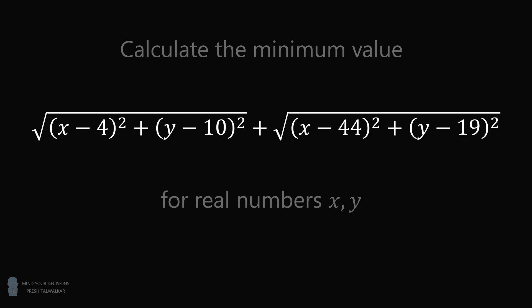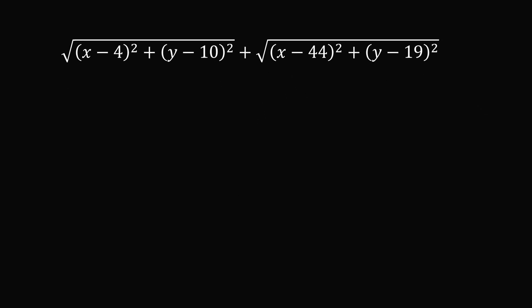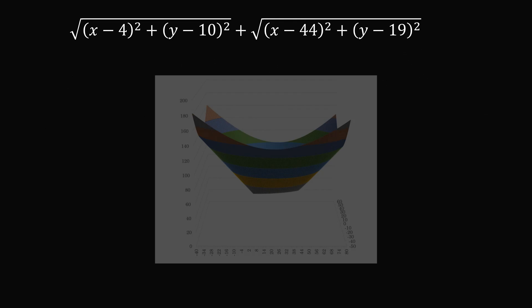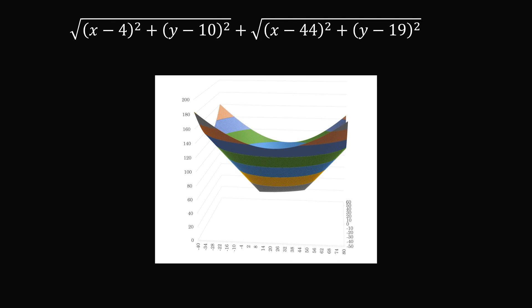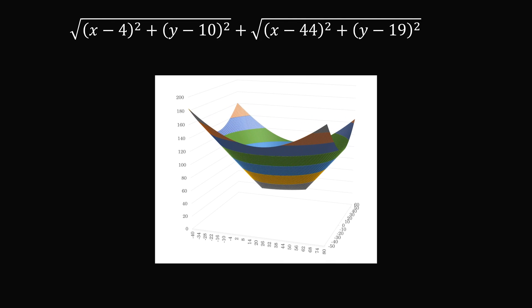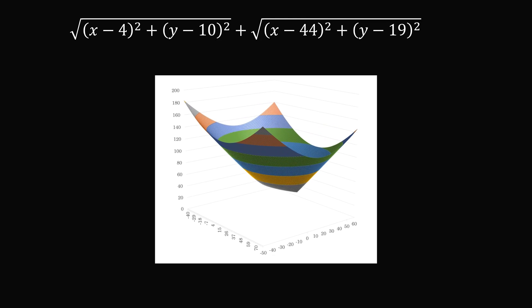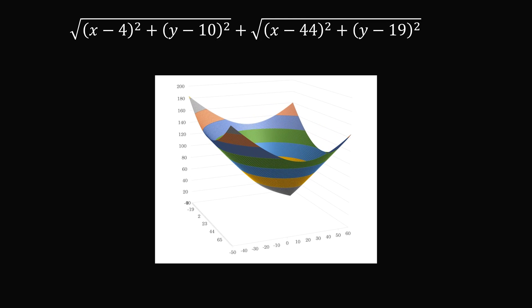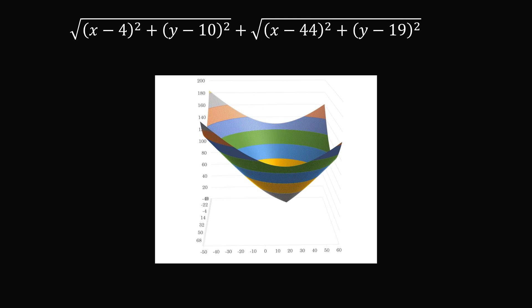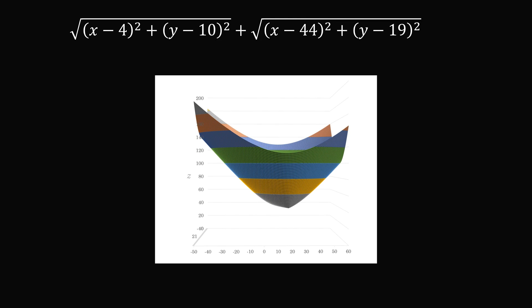One way to understand the question is to plot the graph z equals the sum of the square roots. The shape resembles a paraboloid, and its minimum value happens when z is equal to 41. Thus, intuitively, we know the answer is equal to 41.